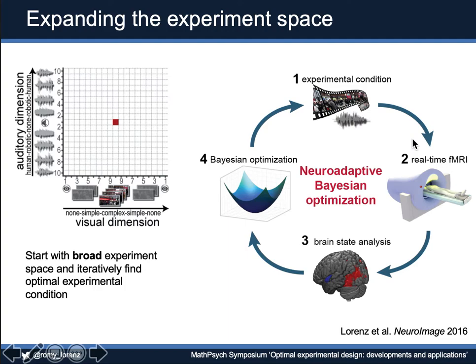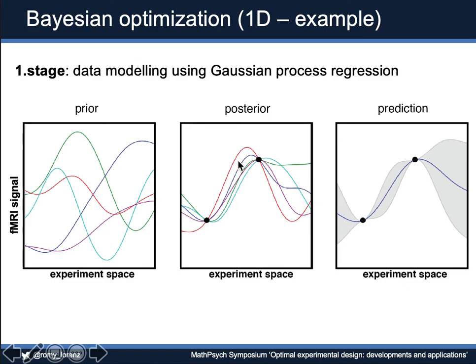Before I go into application scenarios, I want to briefly explain Bayesian optimization. It's a two-stage procedure that iteratively repeats itself in a closed-loop. The first is the data modeling stage using Gaussian process regression. In our case, this is a regression across the experiment space — we're trying to predict the brain signal across this space. Gaussian processes are really convenient because they're non-parametric and very flexible, allowing non-linear fits.